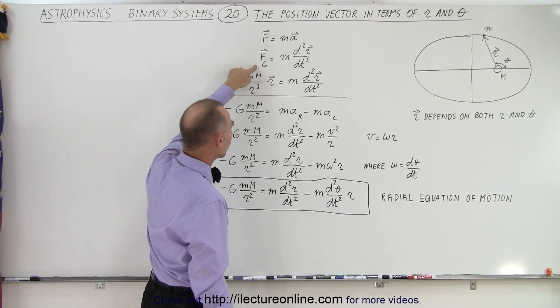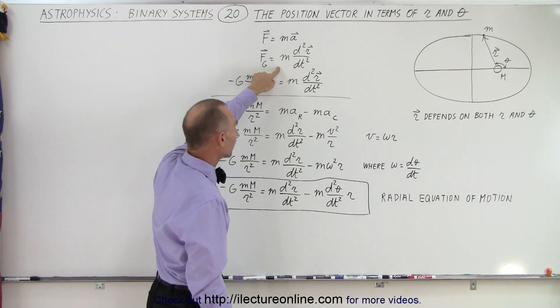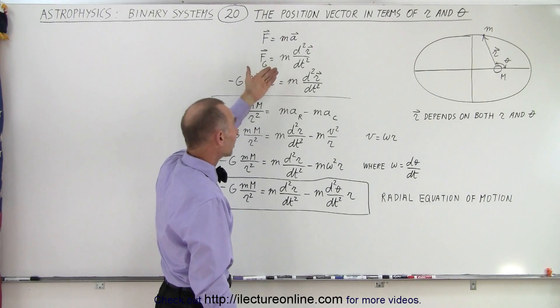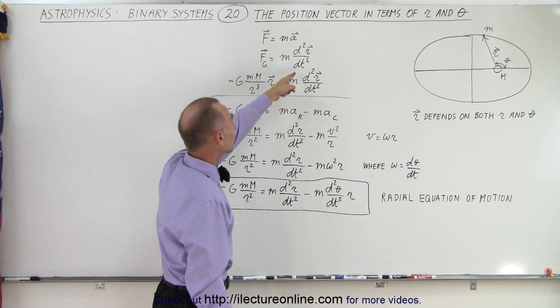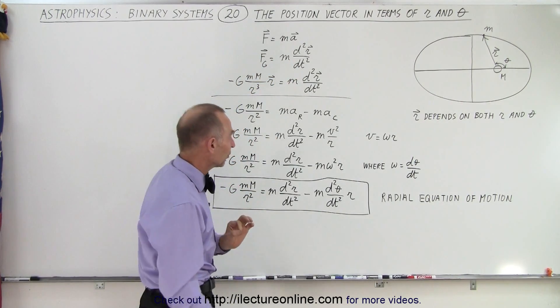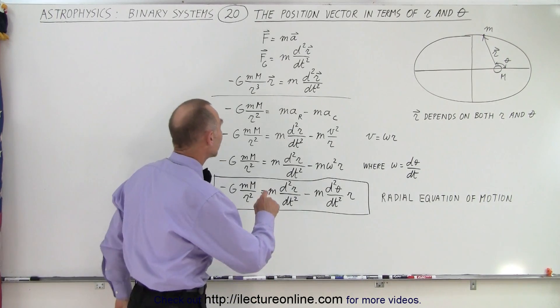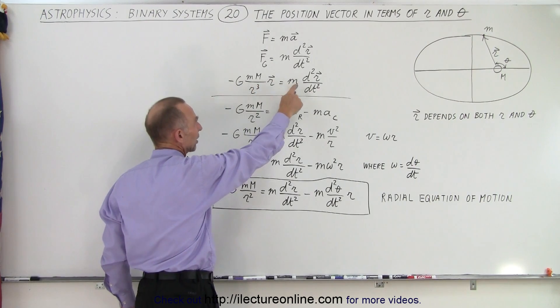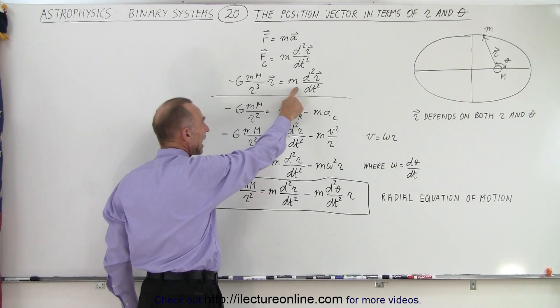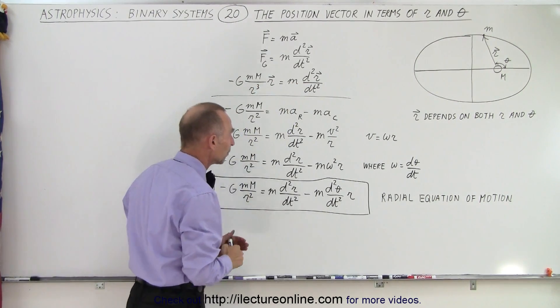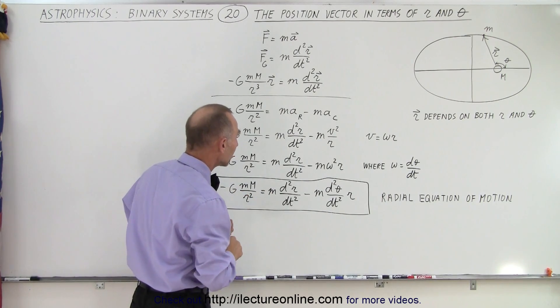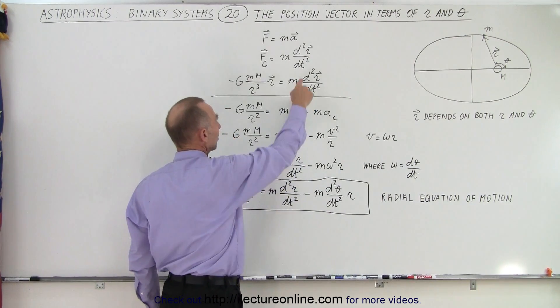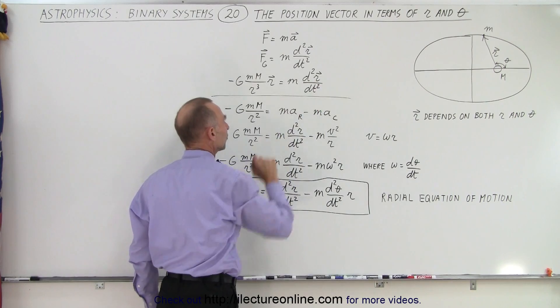So we take the gravitational force, which is equal to the mass of the planet times the rate of change, the second derivative with respect to time of the position vector. If we write it in vector format, we get F sub g, of course being in the opposite direction, as m times a, the acceleration as a vector quantity, which can also be written as the second derivative with respect to time of the position vector.